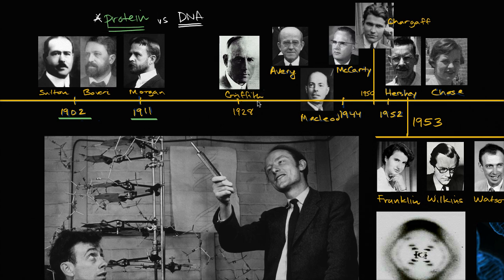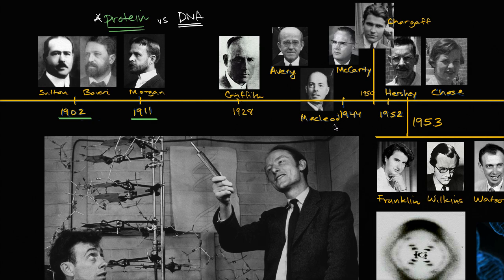But then more and more evidence came on the DNA side. You had Griffith's experiment, where he was able to show that he could take this heat-killed bacteria, but if he mixed it with some other living bacteria, that somehow there's some transformation principle that transforms the living bacteria into the type of species that he had in the heat-killed. And in 1944, Avery, McCarty, and McLeod are able to show some pretty good evidence that the actual principle, the thing that was left in that heat-killed bacteria, was probably DNA.